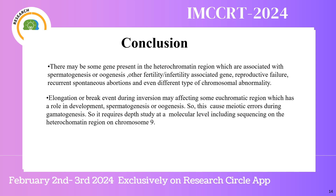Conclusion: There may be some genes present in the heterochromatin region which are associated with spontaneous spermatogenesis or oogenesis, causing mitotic errors during gametogenesis. These may be fertility-infertility associated genes linked to reproductive failure, recurrent spontaneous abortion, and different types of chromosomal abnormality. This requires in-depth study at the molecular level, including sequencing of the heterochromatin region on Chromosome 9.